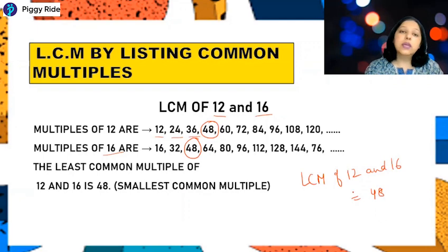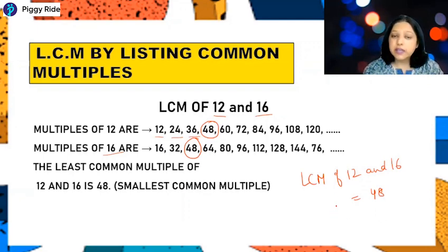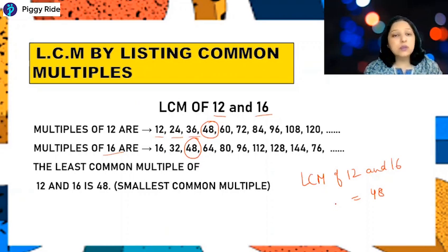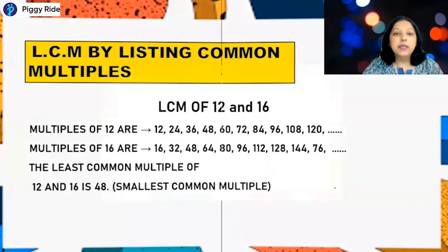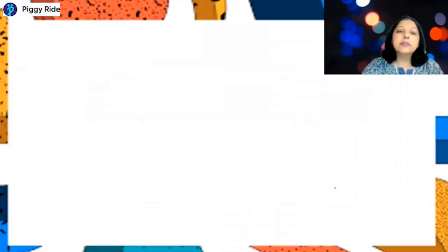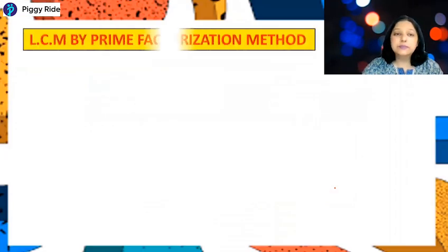To summarize method one: write the multiples of all given numbers, try to write at least five multiples each, then check the smallest common multiple — that smallest common multiple is the LCM. Now the second method is by prime factorization.